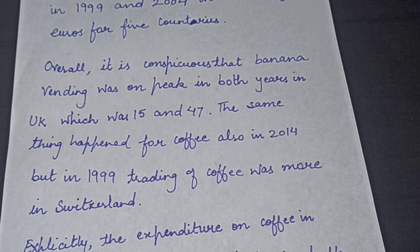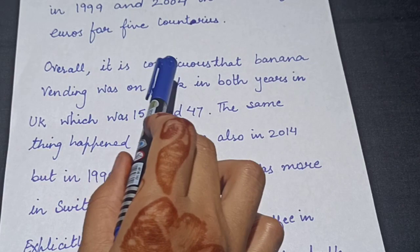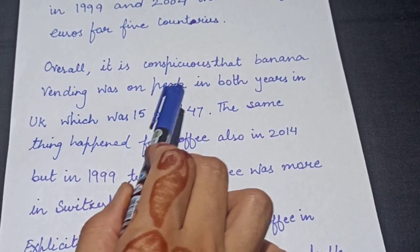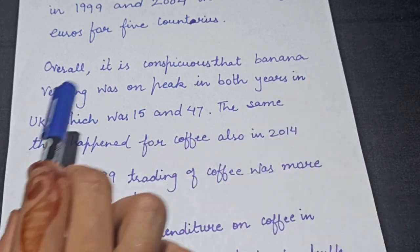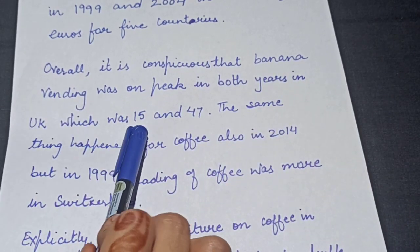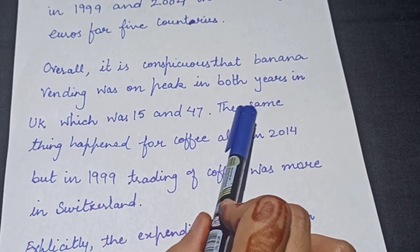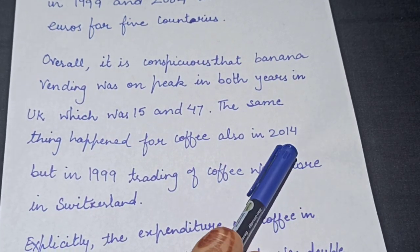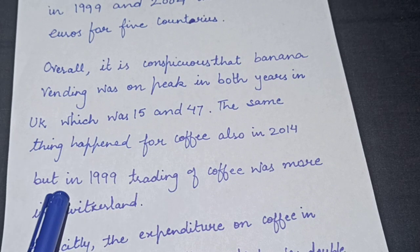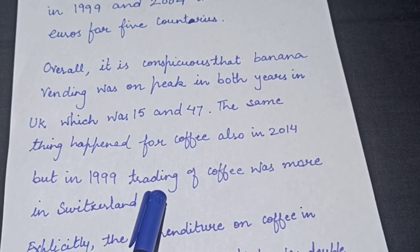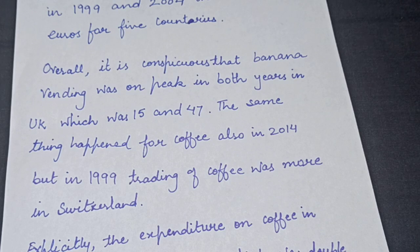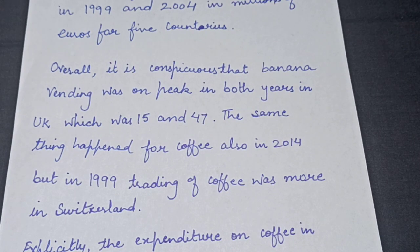Now in the overview: "Overall, it is conspicuous that banana vending was on peak in both years in UK, which was 15 and 47. The same thing happened for coffee also in 2004. But in 1999, trading of coffee was more in Switzerland."